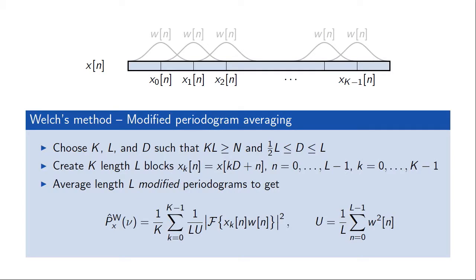This is the basis of a method called Welch's method. In Welch's method, we choose three parameters: K (number of blocks), L (length of each block), and D (the overlap factor). K times L is equal to or greater than the number of samples, and D — the shift of each block — is between L/2 and L, allowing for at most 50% overlap. We create overlapping blocks, compute length-L modified periodograms, average them, and normalize by the factor U based on the window to account for the window's absolute value.